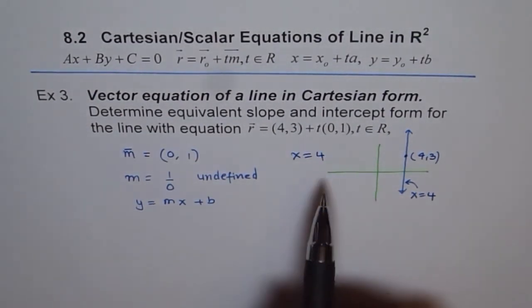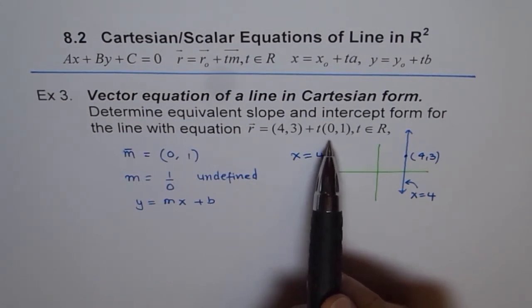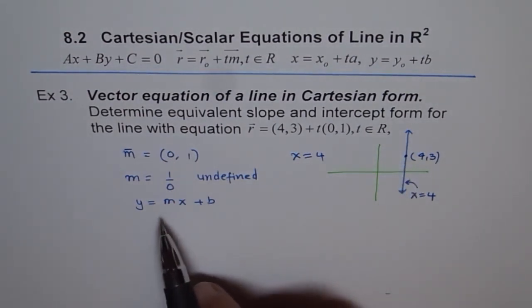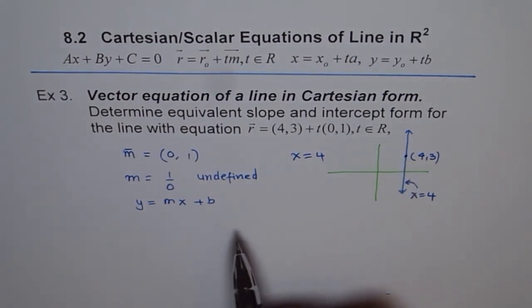So remember that. In vector equations, we have a direction number which can represent even a vertical line, which cannot be represented by y = mx + b. So that's why this is a very important example to understand. Thank you.